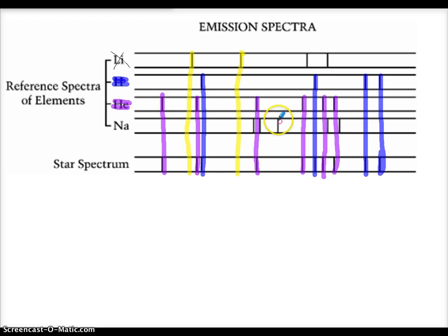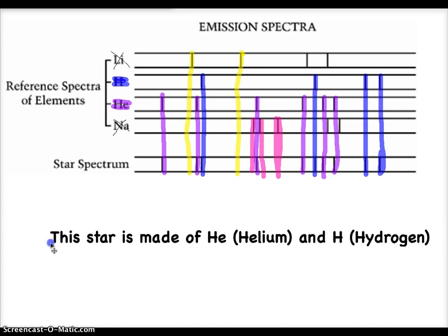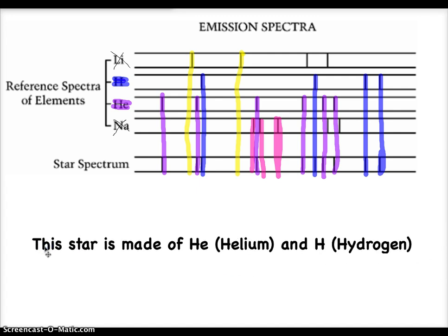Let's check sodium. Sodium has this line. Seems to be missing. Let's check this other line. Seems to be missing. Also missing. Got three missing. I think we're pretty confident that this in fact does not have sodium in it. So what we can conclude about this star is that this star is made of hydrogen and helium. This is what you're going to do in your assignment today.